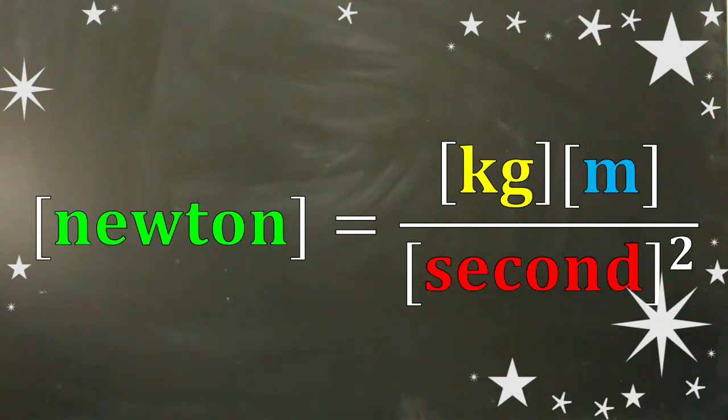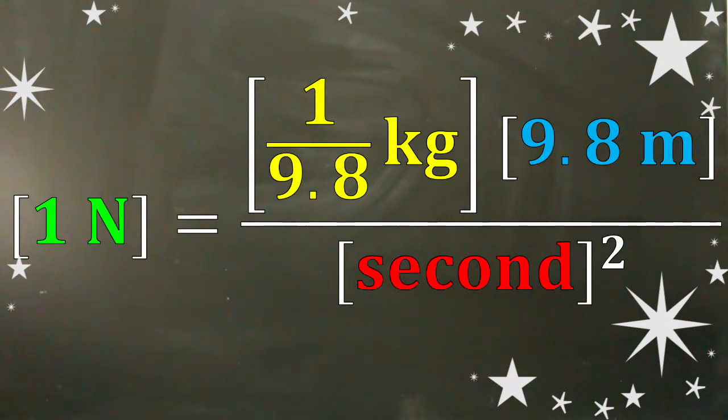Such that on earth, one newton is just 1/9.8 of a kilogram multiplied by the 9.8 meters per second squared, that is the acceleration due to gravity.